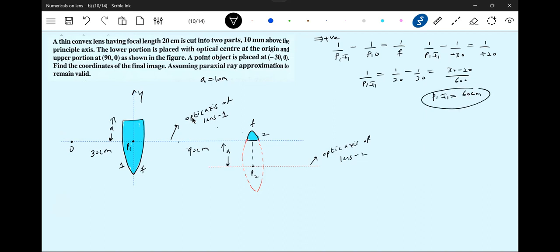60 centimeters means the image has to be somewhere here. This will become now object for this lens, 30 centimeters but at a higher position. So we'll apply now P2 I2. 1 by P2 I1 equal to... for part of a lens, for the smaller lens.